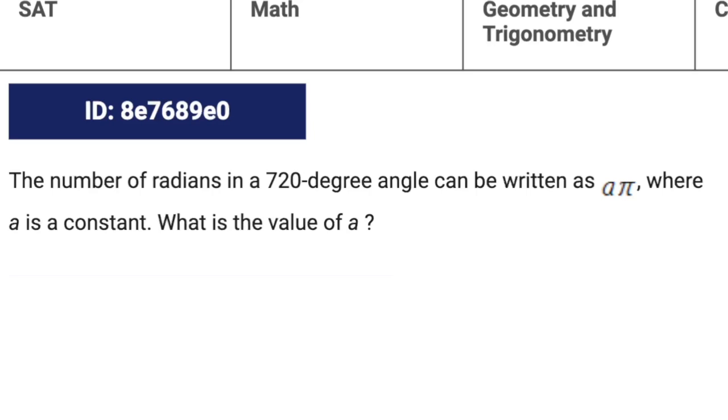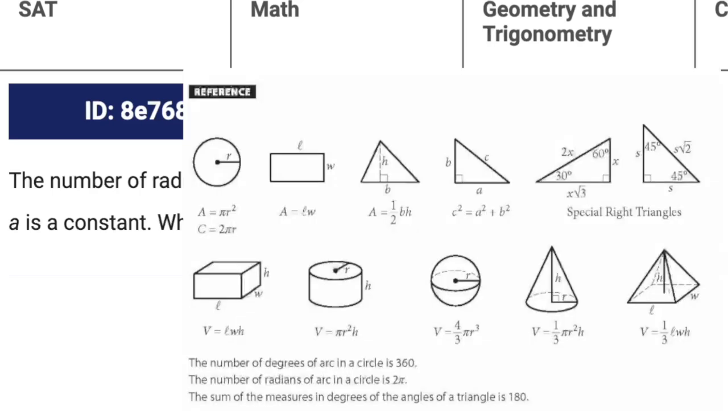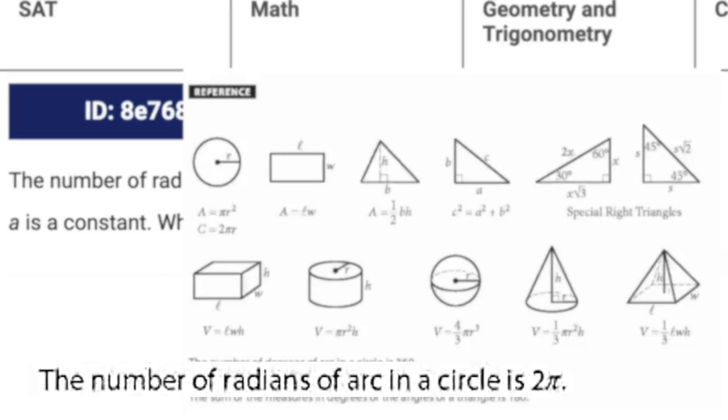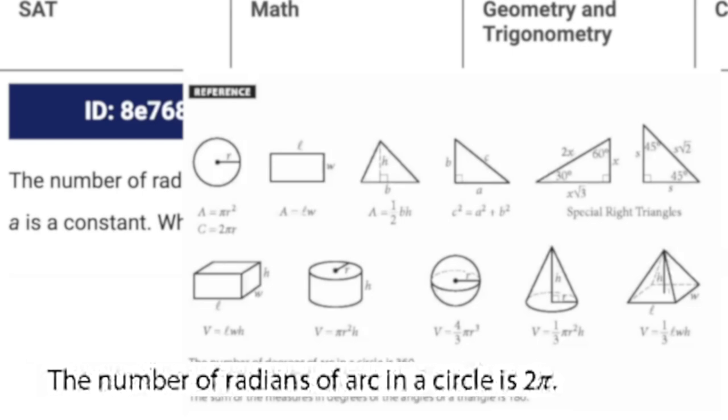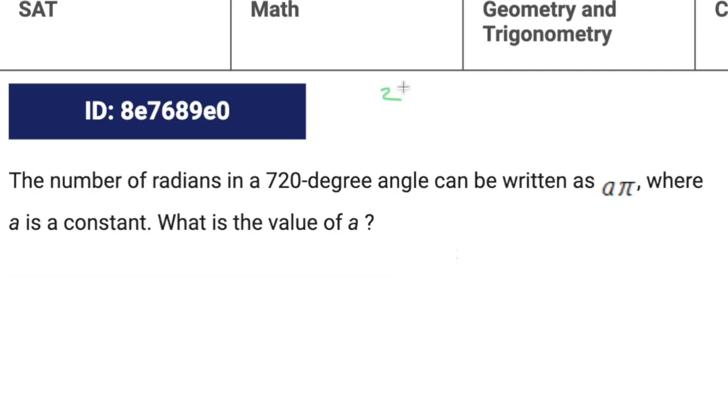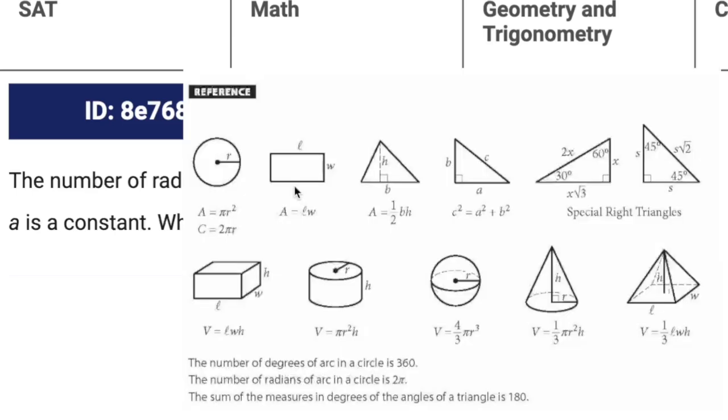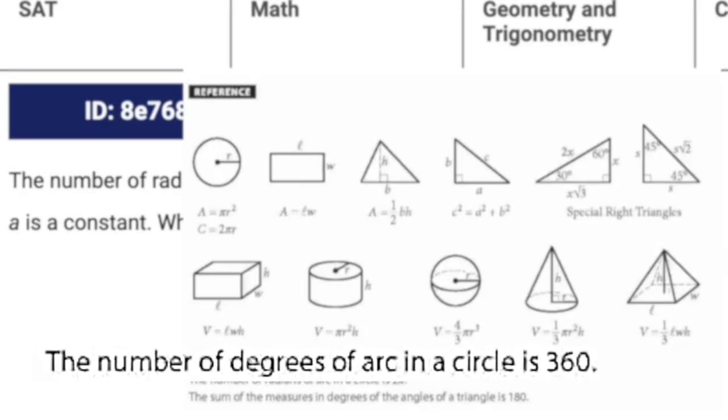So this is really just about, do you know how to convert degrees into radians? Or do you know how to pull up the reference sheet? Because if you pull it up, sure enough, you're going to have the number of radians. It's a little bit hidden, it's at the bottom there. It says the number of radians of arc in a circle is 2π. So let's think about this. If there are 2π radians in a circle, how many degrees are in a circle again? We should know that one. It's 360, right? But in case we forgot, it's also on the reference sheet.